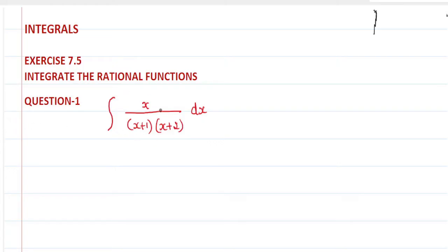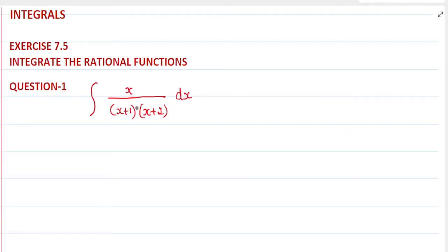We can see that this is in the form of a rational function. To integrate this type of function, we need to convert it into partial fractions and then do the integration.